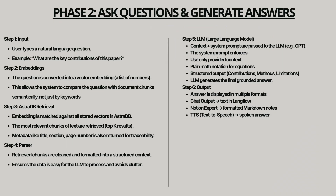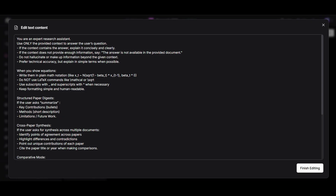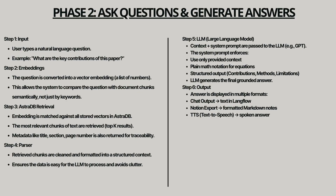It starts with a simple text input where you type your question. That query is converted into embeddings, just like we did with the document chunks earlier. These query embeddings are then compared against the database, and AstraDB retrieves the most similar chunks — this step is called semantic search, and it's what allows your question to be matched to the most relevant parts of the papers. The retrieved text chunks are then passed into a parser, which ensures the text is properly cleaned and formatted before being sent downstream. After that comes the heart of the flow: the LLM node. Here, the retrieved context is combined with a carefully designed system prompt. This prompt guides the model to use only the provided context to avoid hallucinations, to explain equations in plain math notation instead of unreadable LaTeX, and to structure summaries into sections like contributions, methods, and limitations. The LLM then processes all of this and generates the final answer.